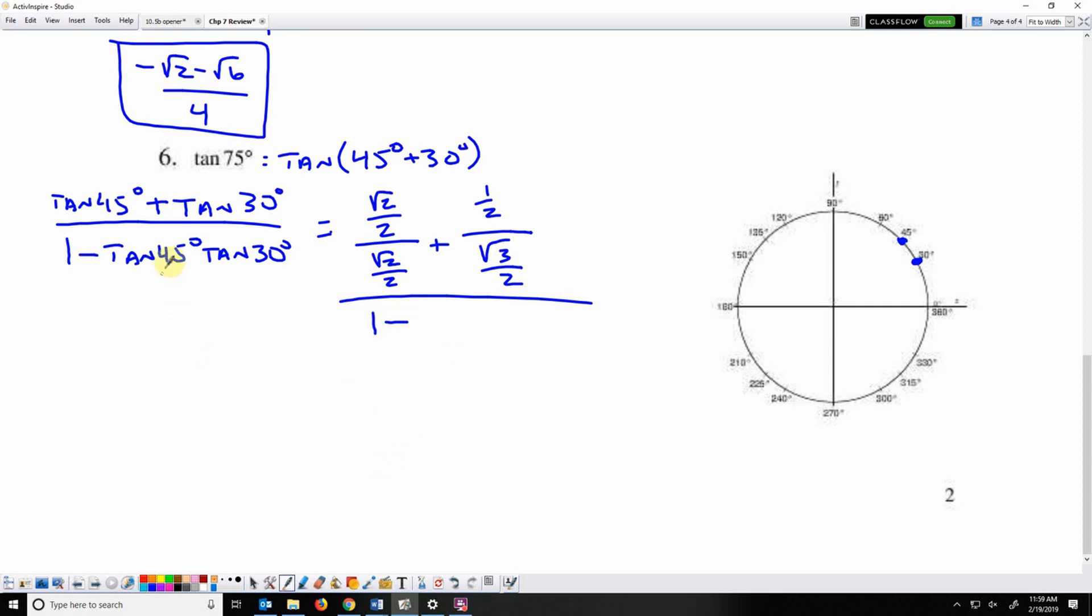And now when I do tangent 45, I'm going to write the simplified version. That's a fraction over the same fraction. That will simplify to 1.